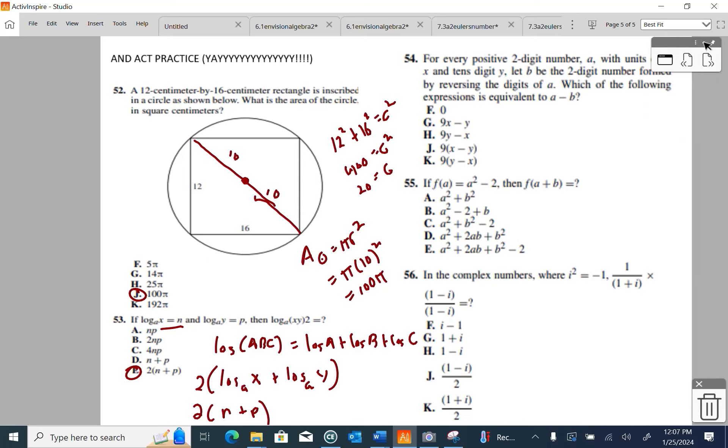All right, for every positive two-digit number A. Oh, I remember this question. I didn't like this question. With units digit X and tens digit Y, let B be the two-digit number formed by reversing the digits of A. So A is a two-digit number, the units digit is X, and the tens digit is Y. B is a two-digit number formed by reversing the digits of A.